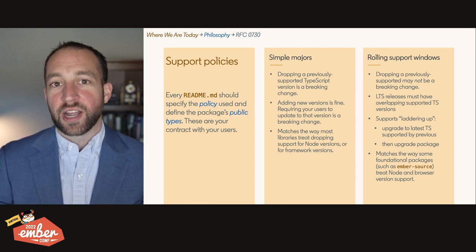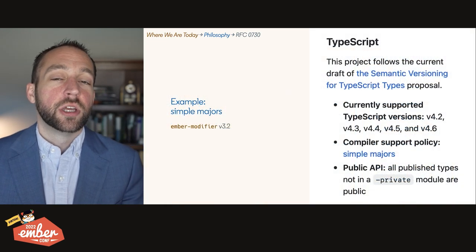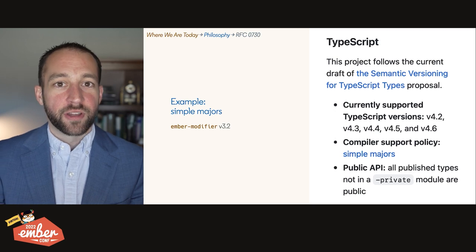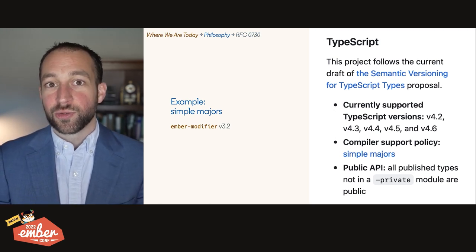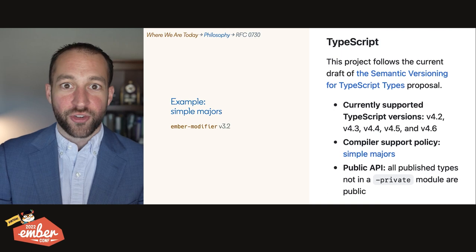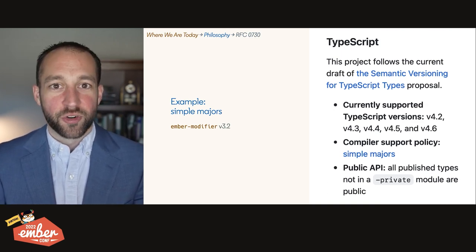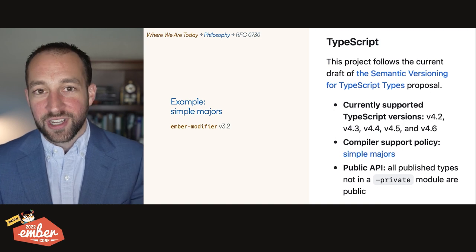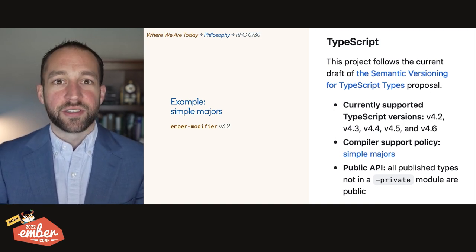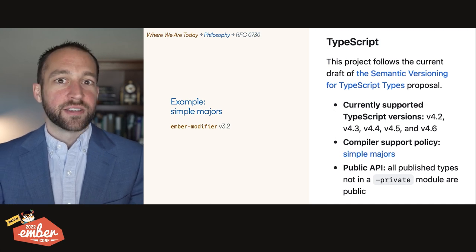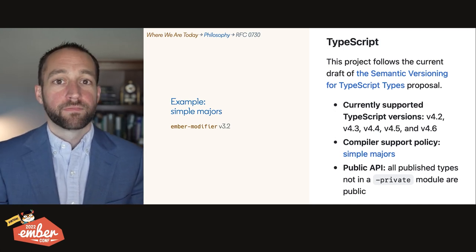Here's how this works in practice. Ember Modifier is an ecosystem library using simple majors. It's currently at version 3.2, and if you look at its readme, it says: we follow the current draft of the semantic versioning for TypeScript types RFC, we support TypeScript versions 4.2 through 4.6, we also test against nightly, we use a simple majors policy, and our public API is everything not in a private folder. Pretty simple.